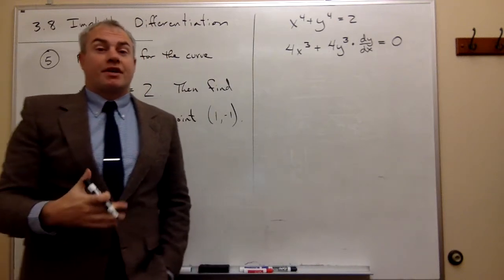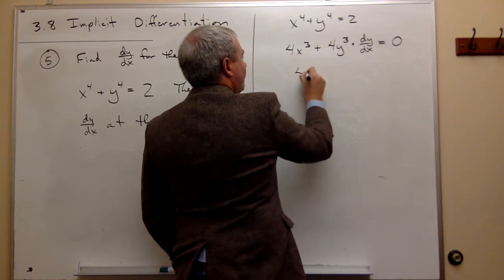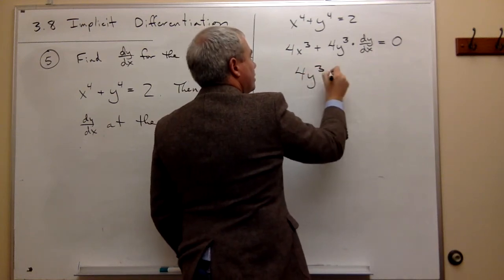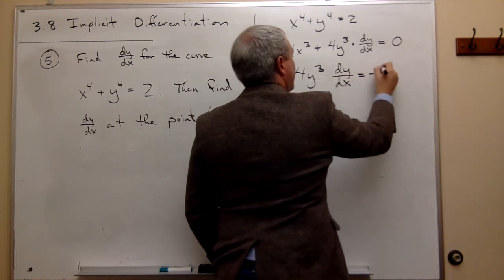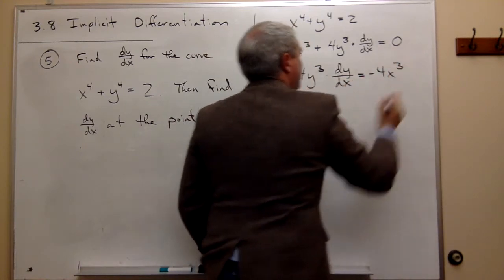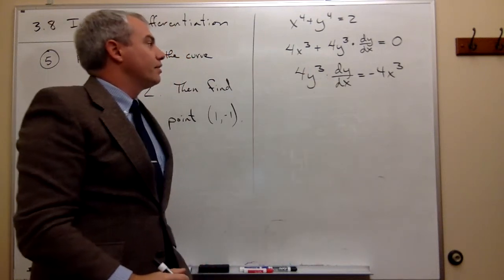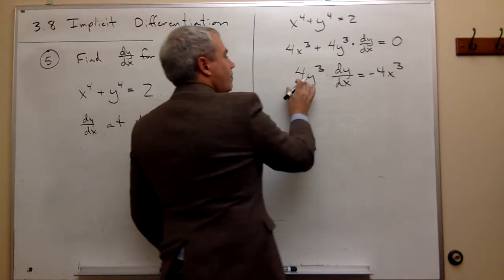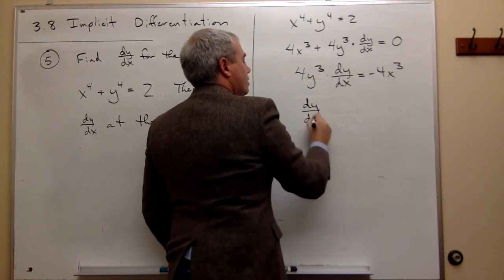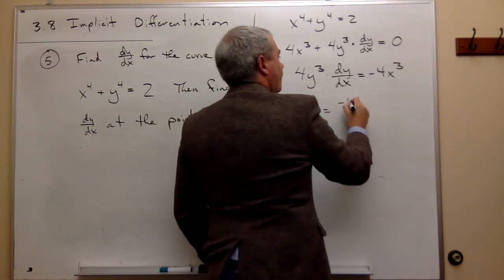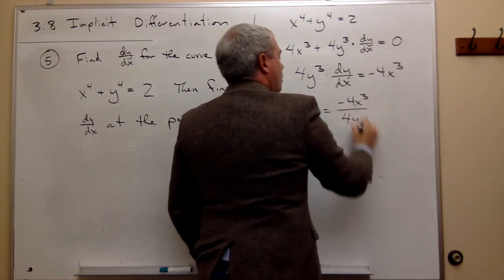Now I just want to solve this thing for dy/dx. If I do, I get that 4y^3 times dy/dx is equal to negative 4x^3. So I just move the 4x^3 to the other side. Now I'll divide both sides by 4y^3.